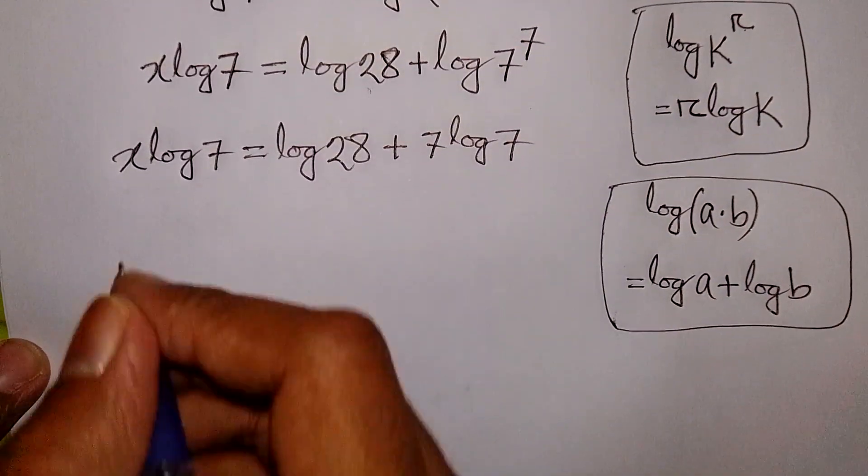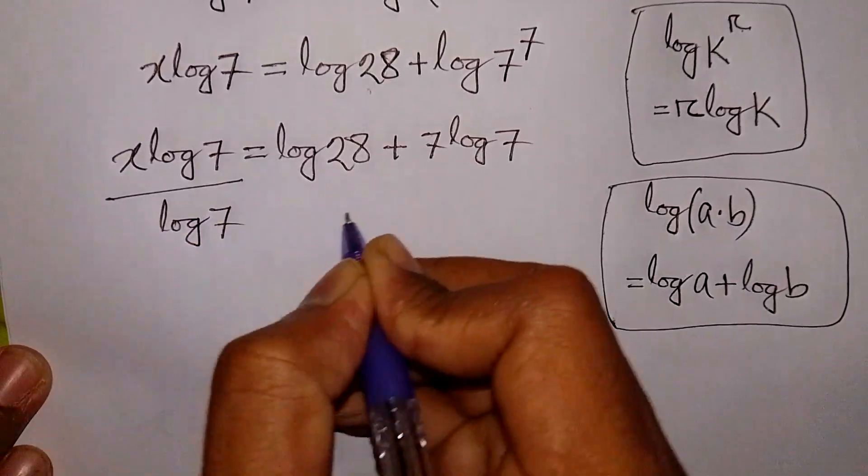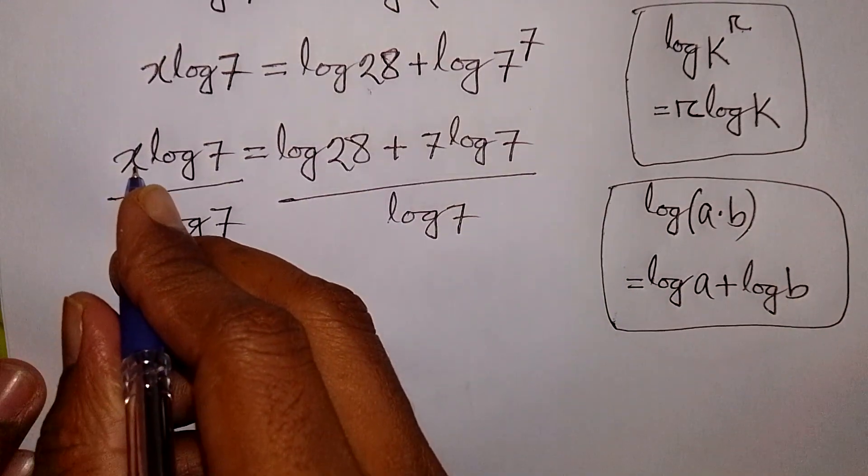Now, we divide it by log 7 in both sides, because we need the value of x.